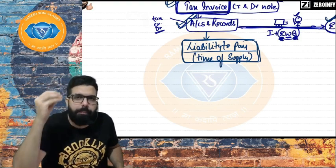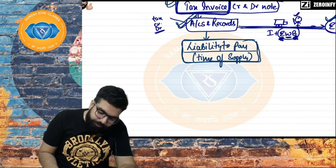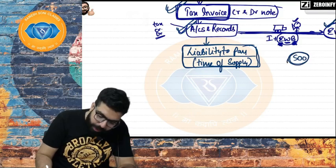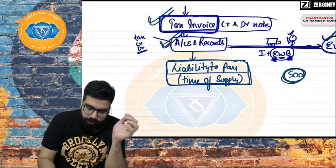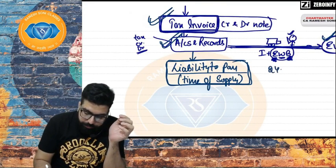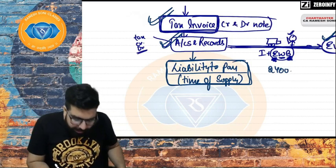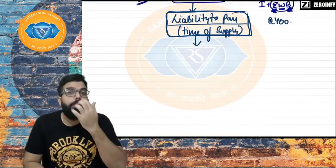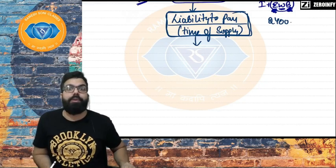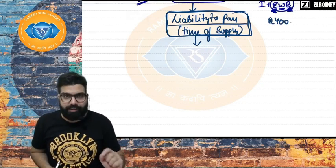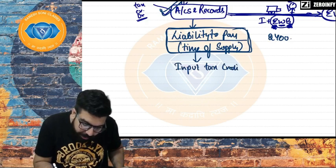Now, suppose I have collected 2,700 in GST. Before paying, I check if I have any Input Tax Credit — just like checking for Uber credit before paying a cab fare. In GST, whenever you buy something and pay tax on it as a registered person, you get a credit. That credit can offset your GST liability.